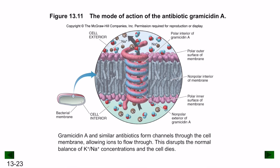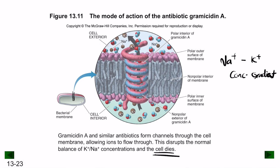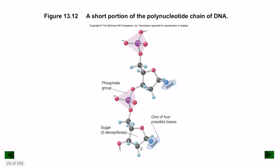The antibiotic gramicidin A works by creating a channel protein inside the membrane structure of bacteria, disrupting the sodium-potassium concentration gradient. Once the sodium-potassium balance is disrupted, the cell automatically begins to undergo cell death. This is the common mechanism of action for most antibiotics — disrupting the ionic balance to kill bacteria.